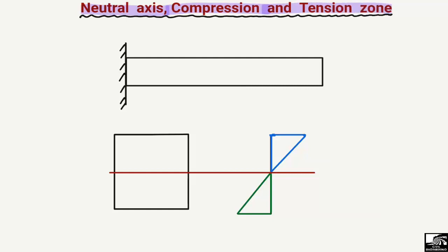We are interested to define these terms for a cantilever beam. Taking an example here, a cantilever beam is a beam which is only supported by a fixed support at one end. Such a beam is known as a cantilever beam — supported at one end with a fixed support. Now when there is a load acting on this beam, for example a uniformly distributed load,